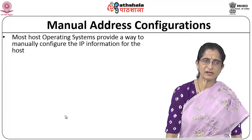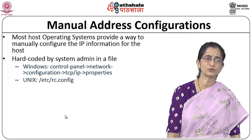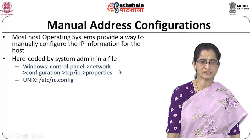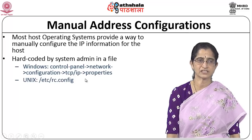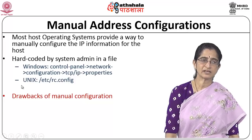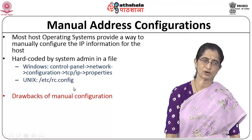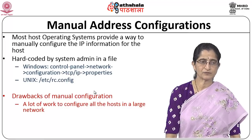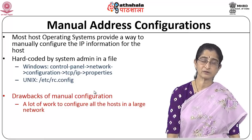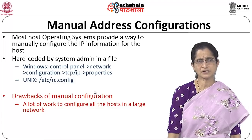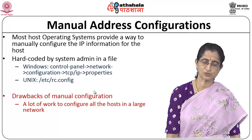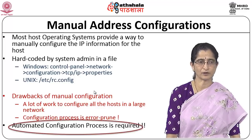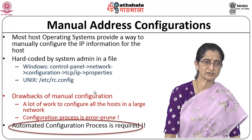Manual address configuration is possible — on Windows you can go to Control Panel > Network > TCP/IP Properties, or on Unix/Linux edit /etc/rc.config to specify an IP address. However, any manual configuration is a lot of work and prone to errors, especially when your network is large with thousands of nodes. Errors can bring down the entire network. So we want an automated configuration process.